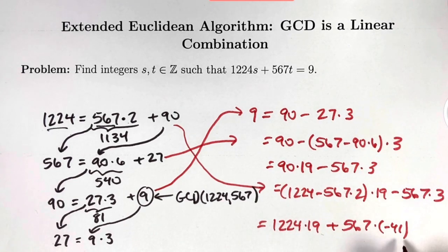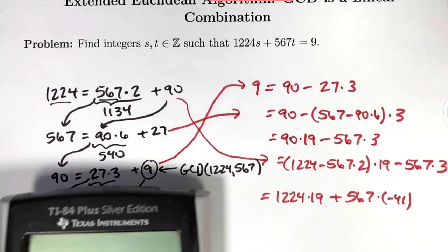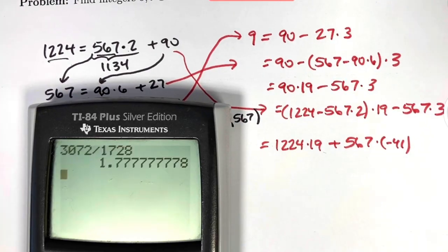And this will be the answer. S is 19. T is negative 41. We can always double check with our calculator.